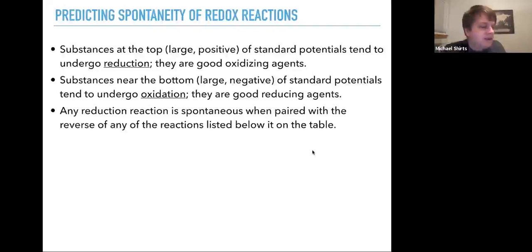Any reduction reaction, this is a key point here that you want to use, any reduction reaction is spontaneous when paired with the reverse of any reactions listed below it on the table. And that's just another way of saying that the cell potential of that reaction would be positive because if you've got something on this point of the list, then if it's something that's lower on the list, it means it has a more negative. If you flip it around and add it, that makes the total of the two more positive.